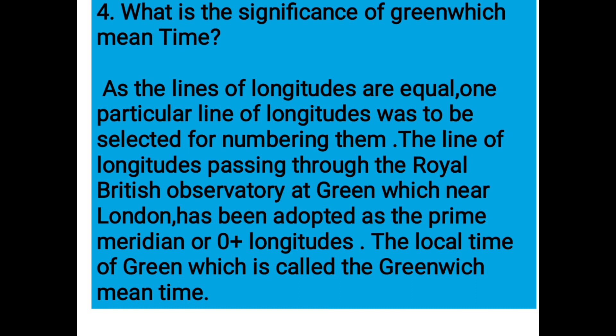Number four: what is the significance of Greenwich Mean Time? Since all lines of longitudes are equal, one particular line of longitude had to be selected for numbering them. The line of longitude passing through the Royal British Observatory at Greenwich, near London, has been adopted as the Prime Meridian or zero degree longitude.